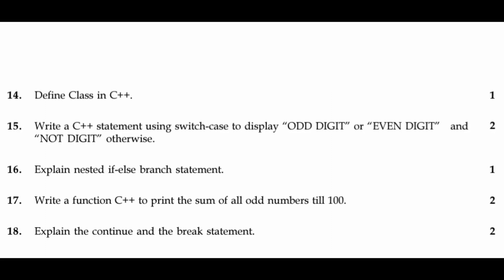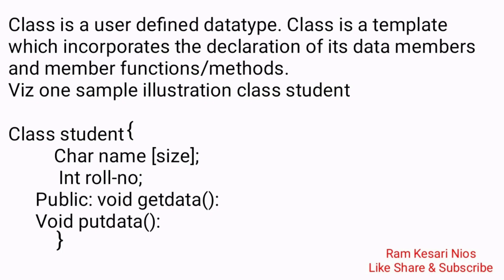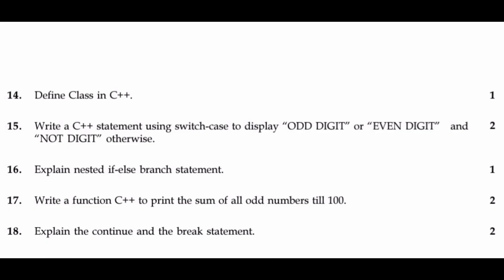Question 14: Define Class in C++. A class is a user-defined data type. A class is a template which incorporates the declaration of its data members and member functions or methods. For example: class student { char name[size]; int roll_number; public: void get_data(); void put_data(); }.